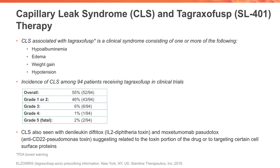CLS has also been seen with other cancer agents, such as denileukin diftitox, which is interleukin-2 conjugated to diphtheria toxin, and moxetumomab pasudotox, which is an antibody-toxin conjugate of anti-CD22 conjugated to pseudomonas toxin. This suggests that the capillary leak is related to the toxin portion of these drugs, or perhaps to targeting certain cell surface proteins.